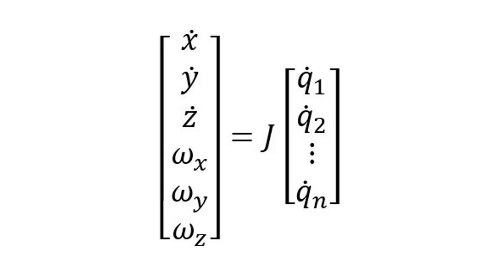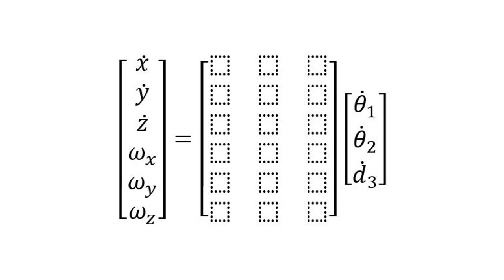For example, suppose that we are trying to find the Jacobian matrix for a manipulator with three joints — two revolute and one prismatic — like our Scara manipulator. The equation would look like this. We need to find what goes in each of those six rows and three columns of the Jacobian matrix.